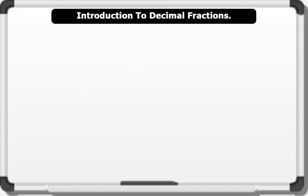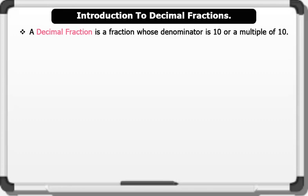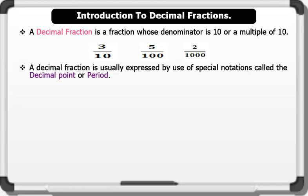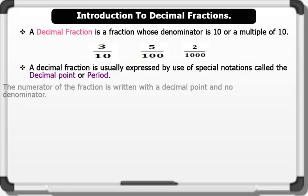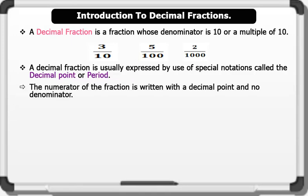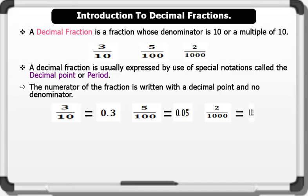Introduction to Decimal Fractions. A decimal fraction is a fraction whose denominator is 10 or a multiple of 10. For instance, 3 over 10, 5 over 100, 2 over 1000, etc. A decimal fraction is usually expressed by use of special notation called the decimal point or period. The numerator of the fraction is written with a decimal point and no denominator. For example: 3 over 10 is written as 0.3; 5 over 100 is written as 0.05; 2 over 1000 is written as 0.002.